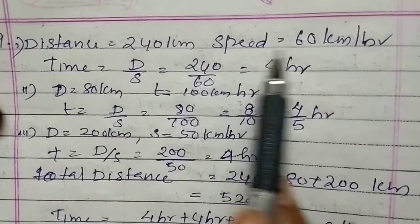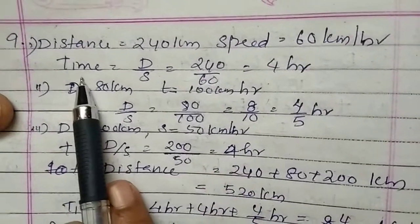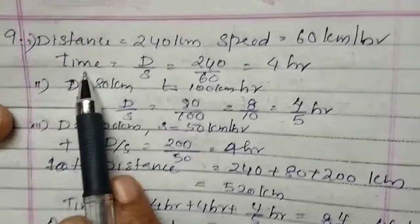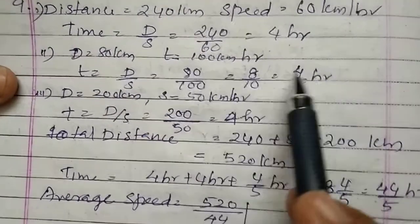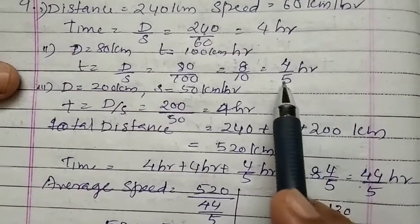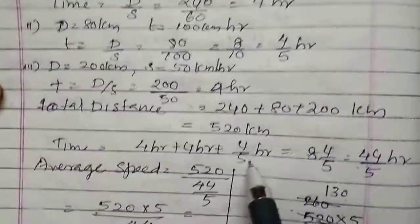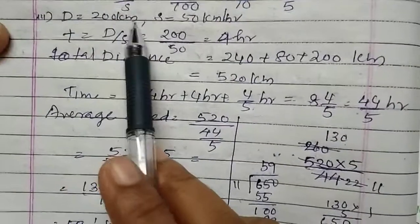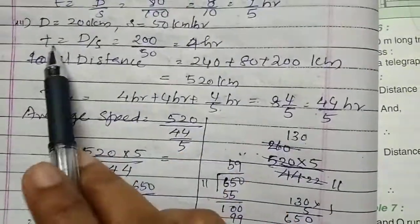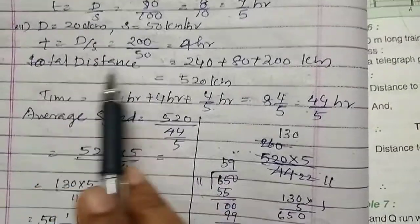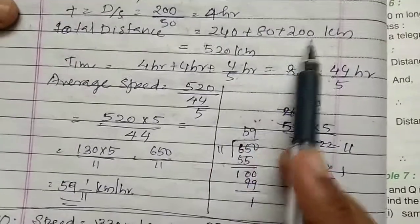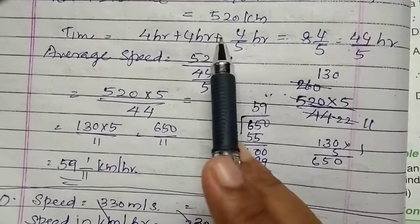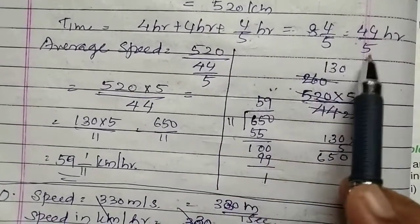Time for first journey: 240 ÷ 60 = 4 hours. Time for second: 80 ÷ 100 = 4/5 hour. Time for third: 200 ÷ 50 = 4 hours. Total distance: 240 + 80 + 200 = 520 kilometers. Total time: 4 + 4/5 + 4 = 8 + 4/5 = 44/5 hours. Average speed equals total distance divided by total time: 520 ÷ (44/5), giving approximately 59 1/11 kilometers per hour.